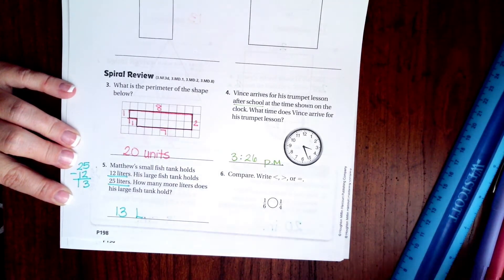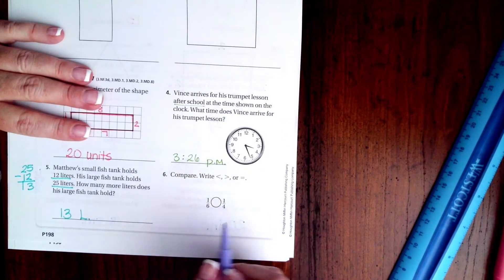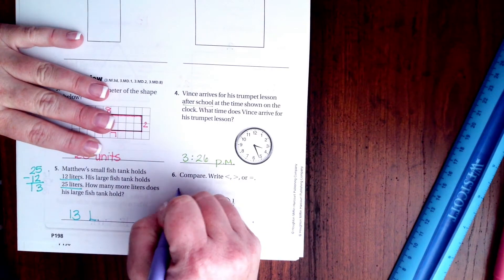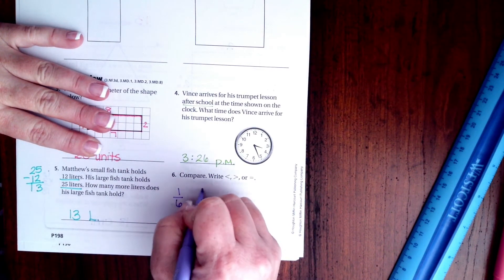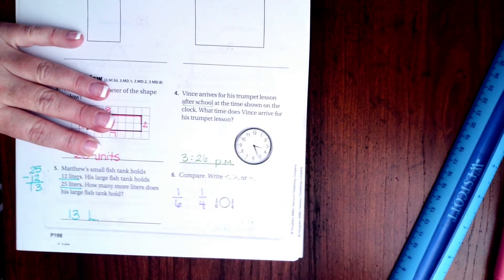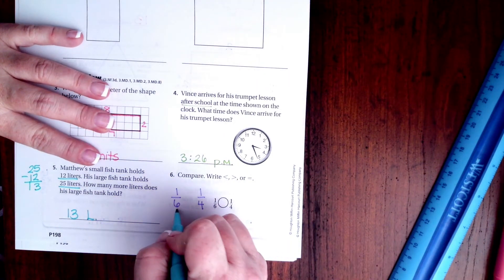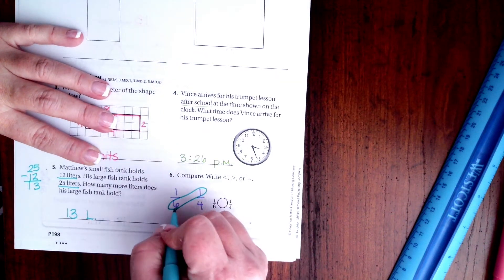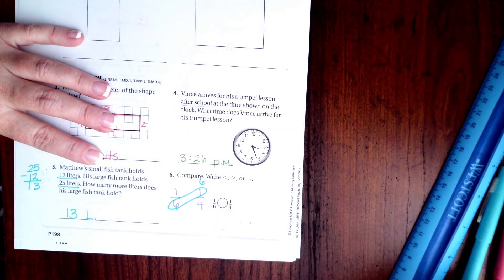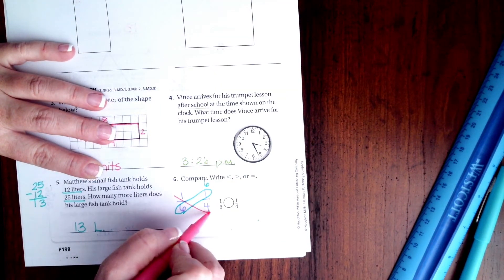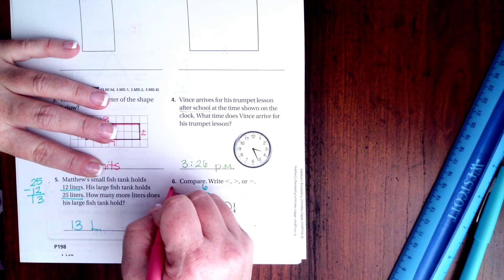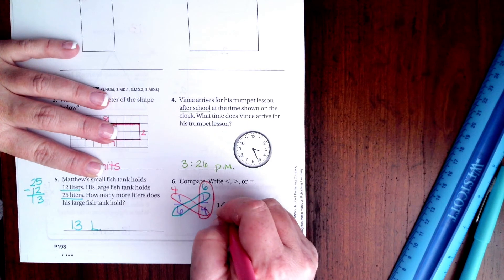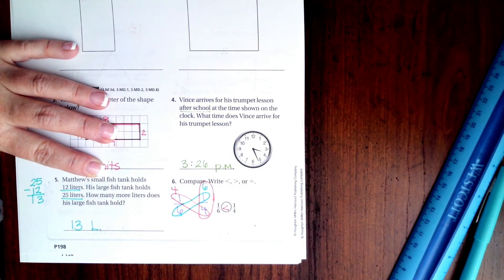All right, notice that we do not have the same denominator, so I'm going to show you guys how to do this. Ready? We have one-sixth and we have one-fourth. So we are going to multiply, we call this the butterfly method. So we're going to multiply six times one is six, we have four times one is four. Well, six is bigger, that makes one-fourth bigger.